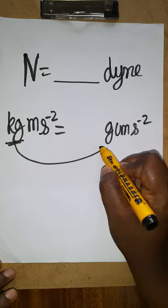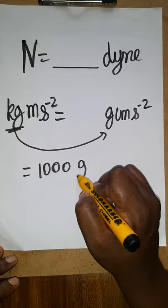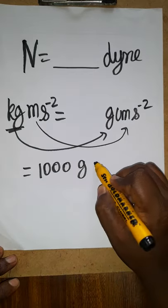First kg to the gram I am going to convert. kg to the gram, 1000 gram will have. Meter to the centimeter, 100 centimeter.